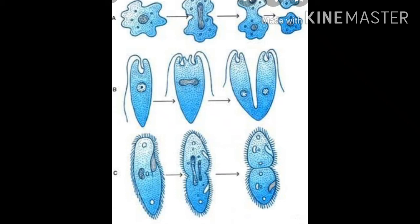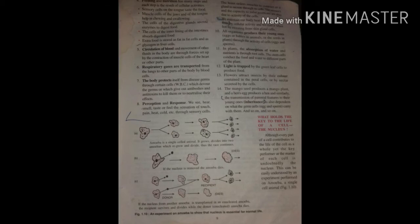In binary fission, a unicellular organism divides into two parts. In multiple fission, a unicellular organism divides into many parts. That is why we can say amoeba is immortal — it divides and splits into two, does not give birth to young ones, but splits by itself to form new daughter cells.